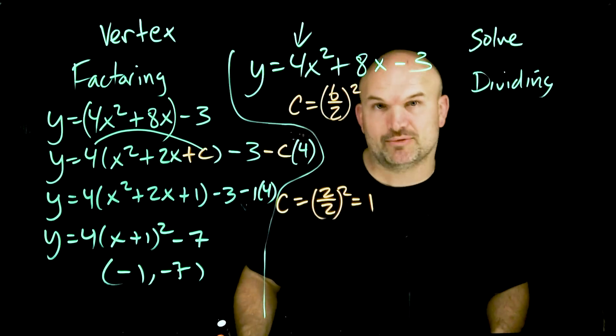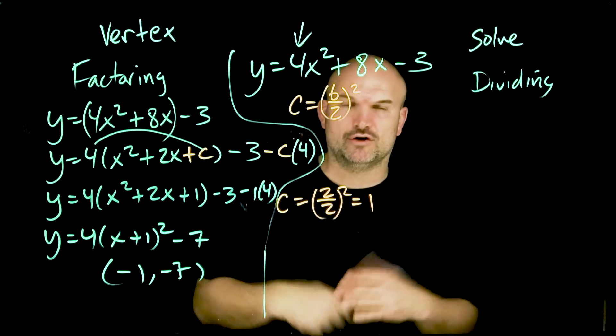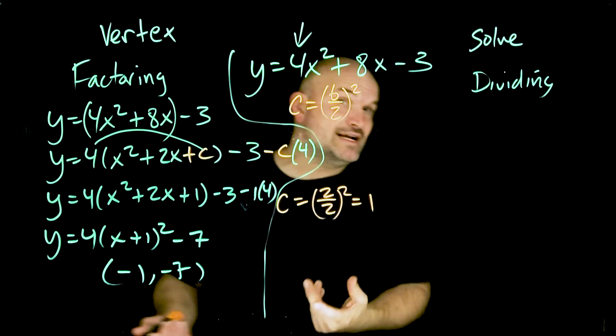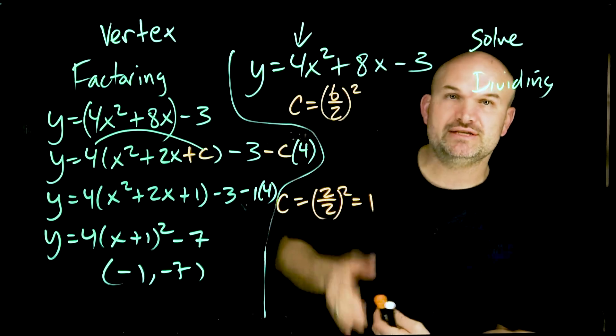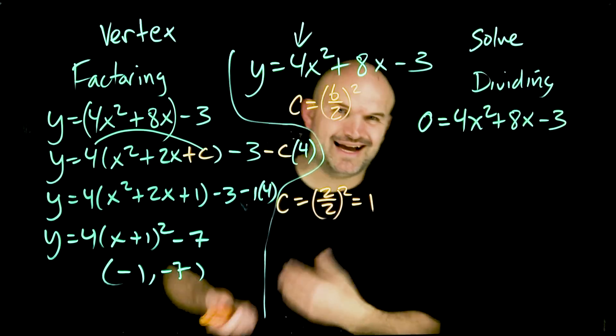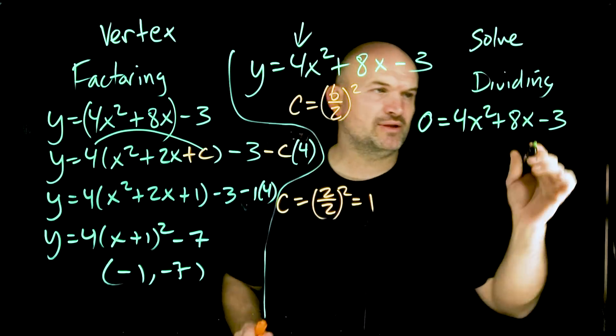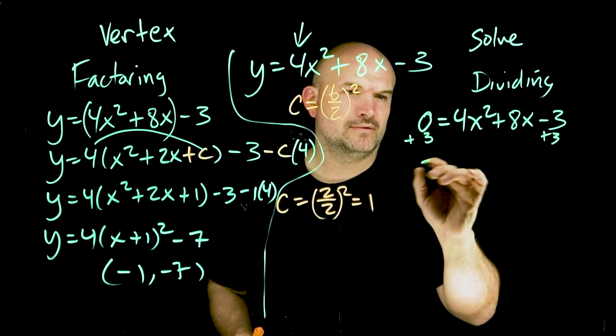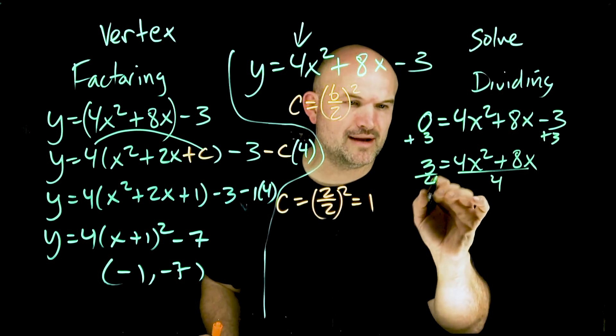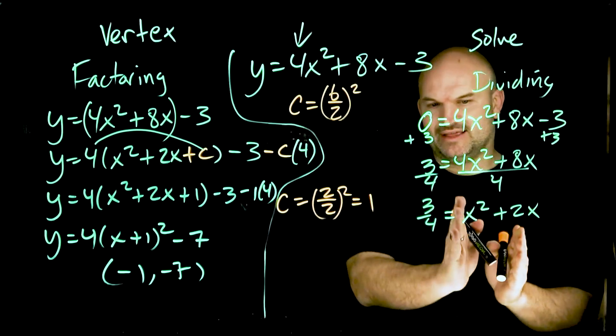Now let's look at the dividing approach. When we're looking at the dividing approach, you could still do it with y's and find the vertex, but the reason I like doing it with solving is because I'm going to replace the y with a zero because that's what we're looking for. We're looking for the solutions when y equals zero. What I want to do is get rid of this four, but I don't really want to divide everything by four just yet. What I want to do is get this three over to the other side. Now my first two terms are divisible by four, so I'm going to divide by four on both sides.